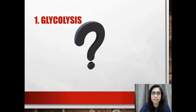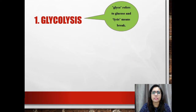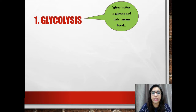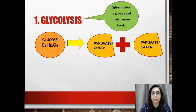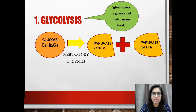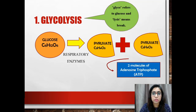Glycolysis — 'glyco' refers to glucose and 'lysis' means break — is the breakdown of glucose molecules into two molecules of pyruvate, or pyruvic acid, catalysed by respiratory enzymes. It releases a small amount of energy to produce two molecules of adenosine triphosphate, ATP.